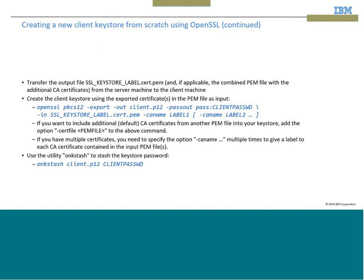Transfer the generated PEM file from the server machine to the client machine. Then create the client keystore using the exported certificates in the PEM file with the OpenSSL command. When providing certificate labels, if you have multiple certificates in your PEM file, you will use minus CA name label1, minus CA name label2, minus CA label3, and so on, for all certificates to be included in the keystore.